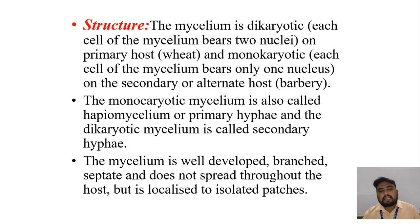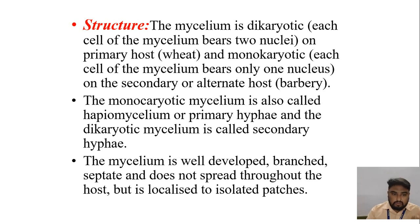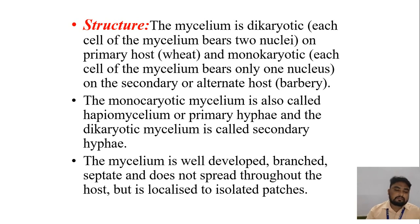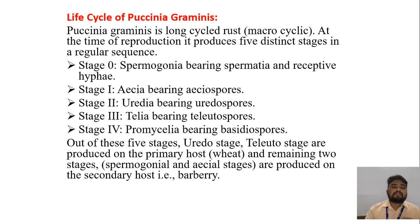Species of Puccinia are either autoecious, meaning a complete life cycle on a single host, or heteroecious, meaning a complete life cycle on two different hosts. The mycelium is dikaryotic — each cell bears two nuclei — on the primary host, and monokaryotic — each cell bears only one nucleus — on the secondary or alternate host. The monokaryotic mycelium is also called haploid mycelium or primary hyphae, and the dikaryotic mycelium is called secondary hyphae.